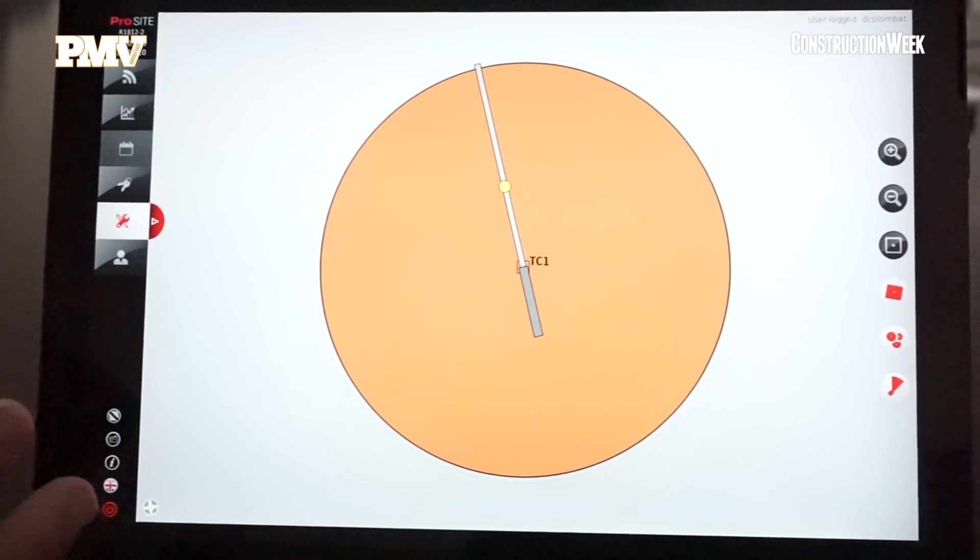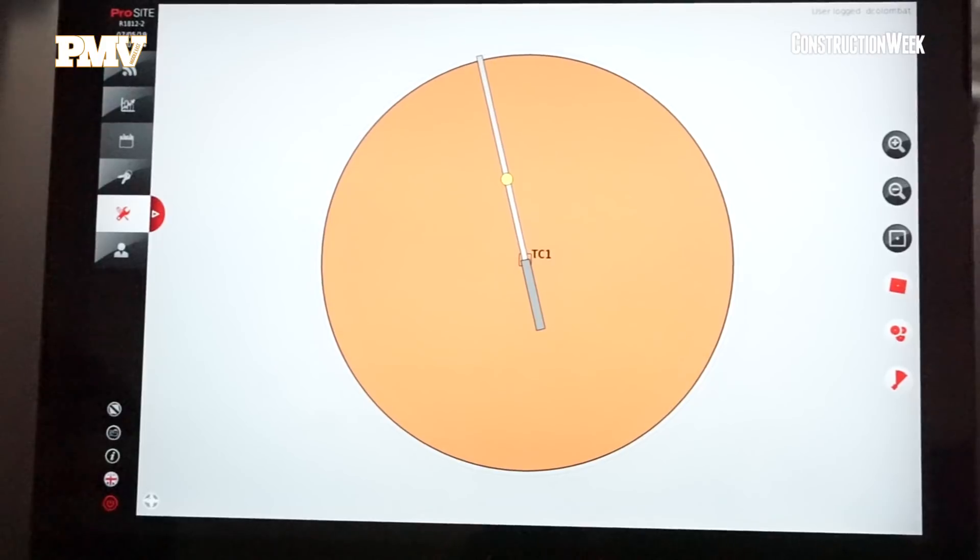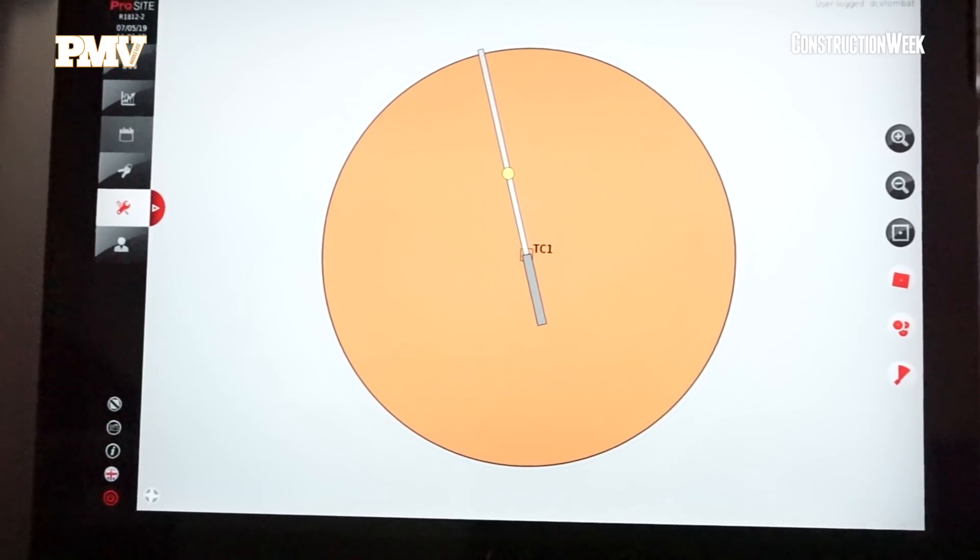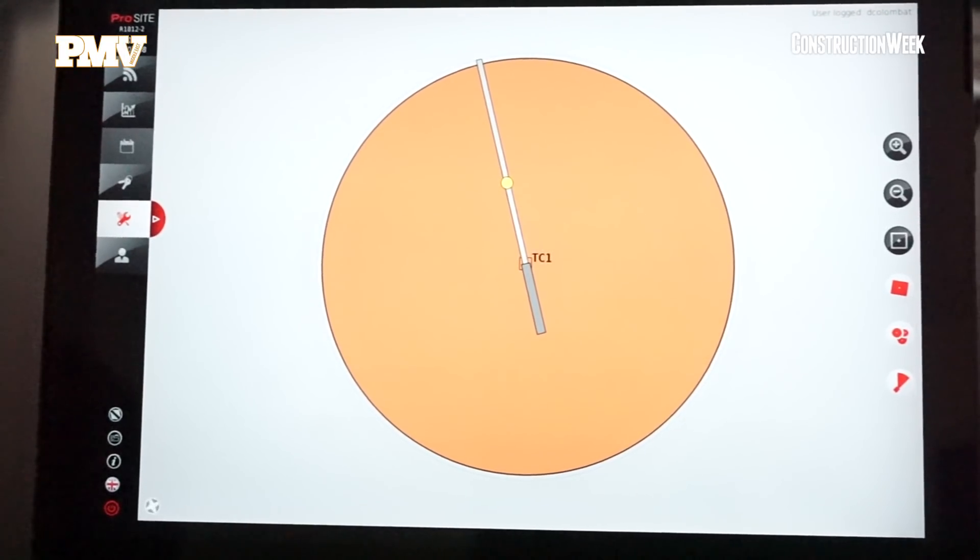With ProSight it's on any device. We can access the system through Wi-Fi, and thanks to that we can set up the system and we can access remotely the data logging and all sorts of information.